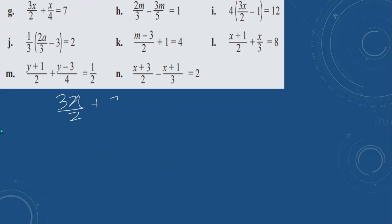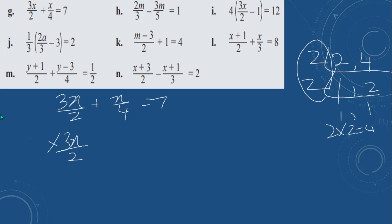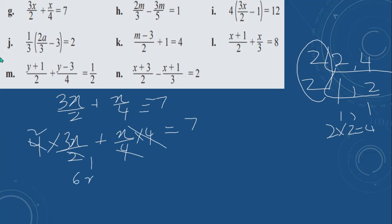Next: 3x over 2 plus x equals 7. The LCM of 2 and 4 — 2 times 2 is 4, so LCM is 4. Multiply both fractions by 4. 4 and 4 cancel. 2 times 1 and 2 times 2. So we get 6x plus x, which is 7x, equal to 7 times 4 which is 28. Wait — 7x equals 7, so divide by 7. x is equal to 1.